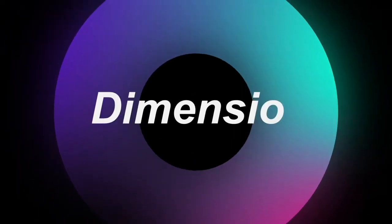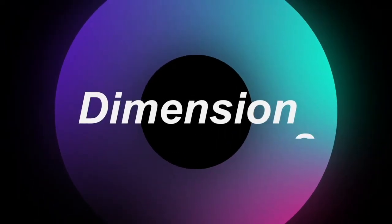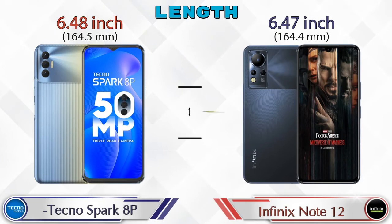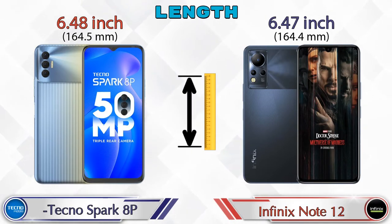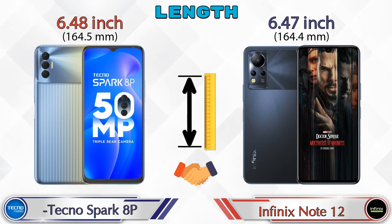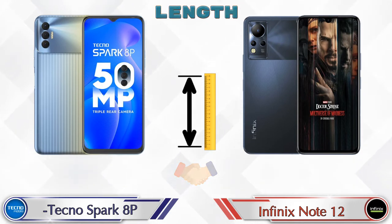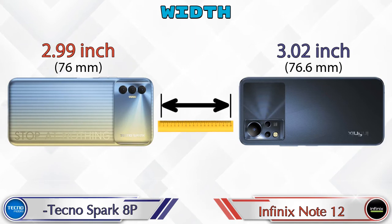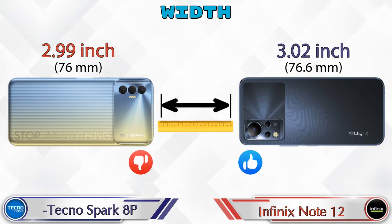Checking the dimensions: the length of the Spark 8P is 6.48 inches and the Note 12 is 6.47 inches, which are almost the same. Width: the Spark 8P is 2.99 inches and the Note 12 is 3.02 inches.